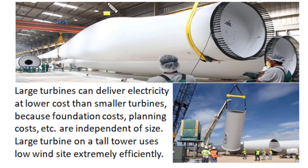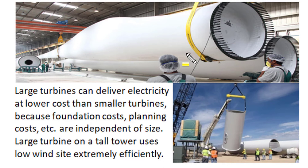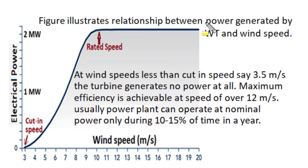The reasons large turbines are more economical are that foundation cost and planning cost are independent of the size of the turbine. When using tall tower heights and long turbine blades, low wind speed sites can be exploited extremely efficiently. In India, China, and the USA, all small-size wind turbines are now being replaced by giant 2 to 3 megawatt size wind turbines, having tower heights of 120 to 140 meters and rotor sweep diameters of around 120 to 130 meters.